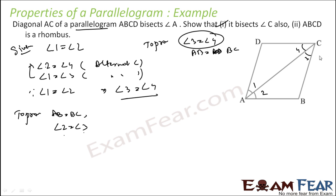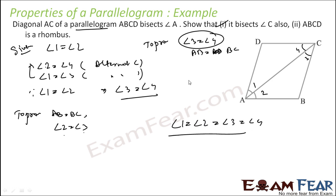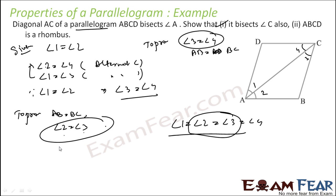So let's try to prove angle 2 is equal to angle 3. From what we have drawn, we know that angle 1 is equal to angle 2 is equal to angle 3 is equal to angle 4. Thus angle 2 is also equal to angle 3. Since angle 2 is equal to angle 3, AB is equal to BC.